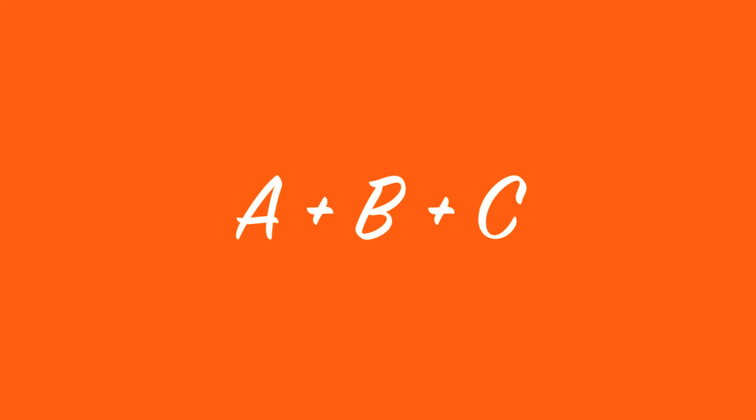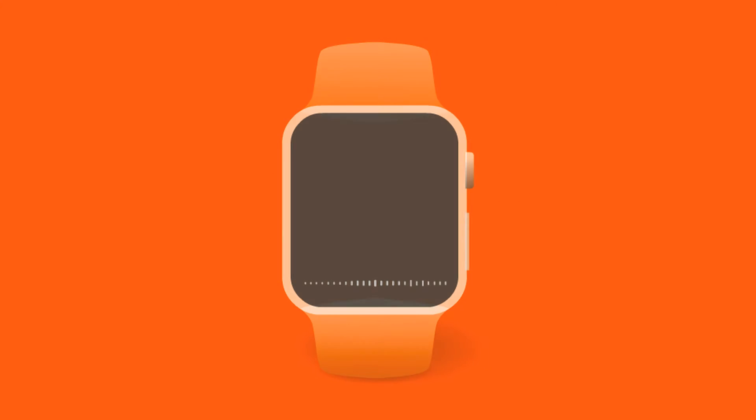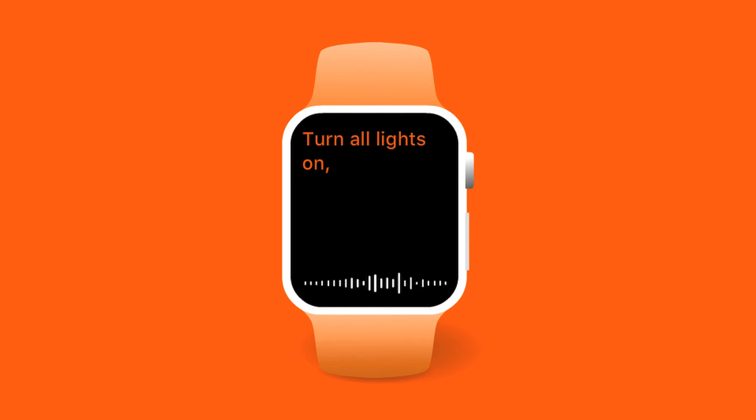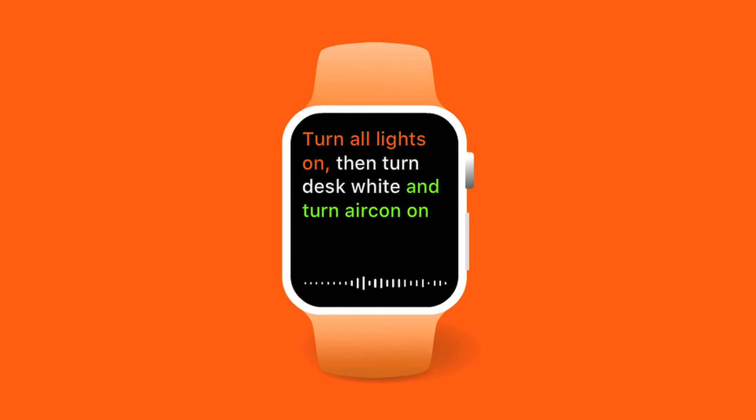You can combine multiple actions and execute them all at once. For example: turn All Lights On, then turn Desk White, and turn Aircon On.